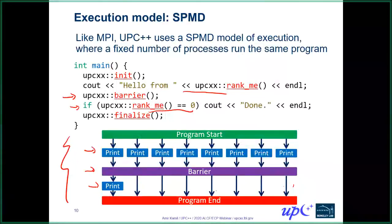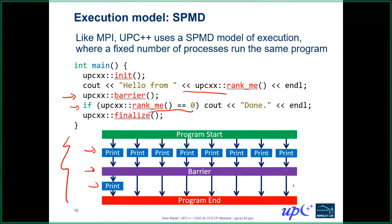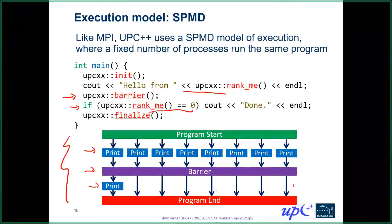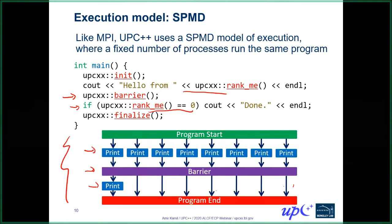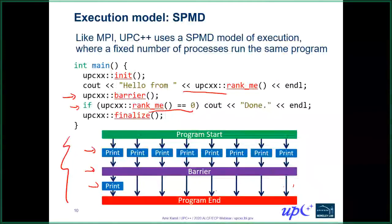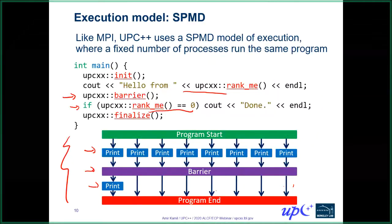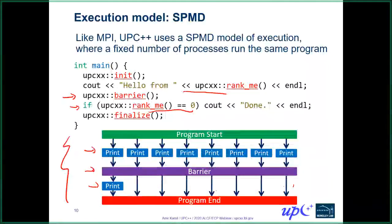UPC++ is a C++ library — it's built using standard C++, so you can install it and include it just as you would any other third-party C++ library. To summarize, we have the PGAS memory and communication model, and the SPMD execution model.